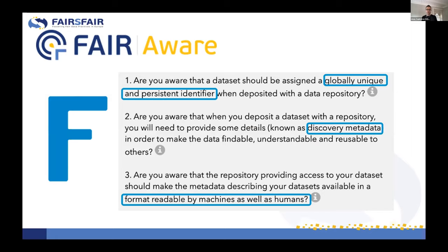The first question focuses on the fact that a dataset should be assigned a persistent identifier, known as a PID — for example, a Digital Object Identifier. The second question addresses discovery metadata.